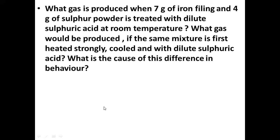When the mixture of iron and sulphur is heated, what is the compound formed? Iron and sulphur are chemically reacting — they are chemically combined. Name that compound. Pratham Kumar, row number 33. It's iron sulphide.